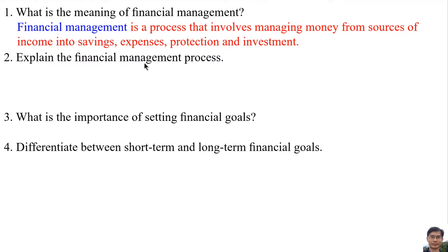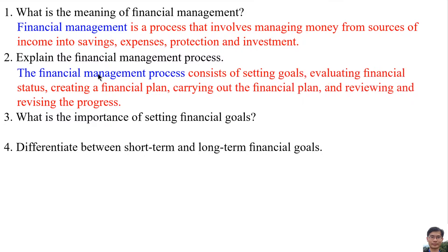Explain the financial management process. The financial management process consists of setting goals, evaluating financial status, creating a financial plan, carrying out a financial plan, and reviewing and revising the progress.